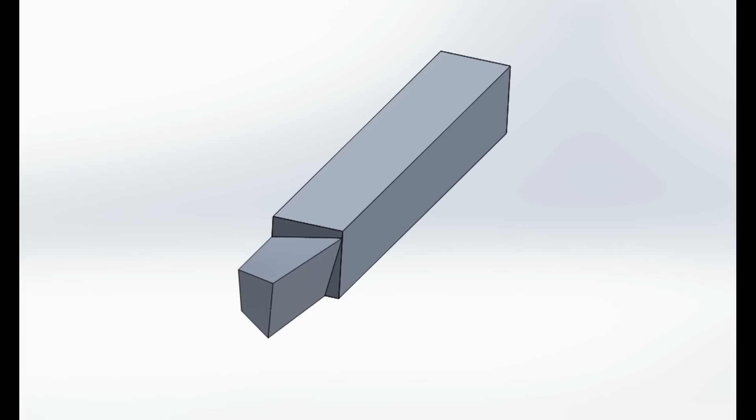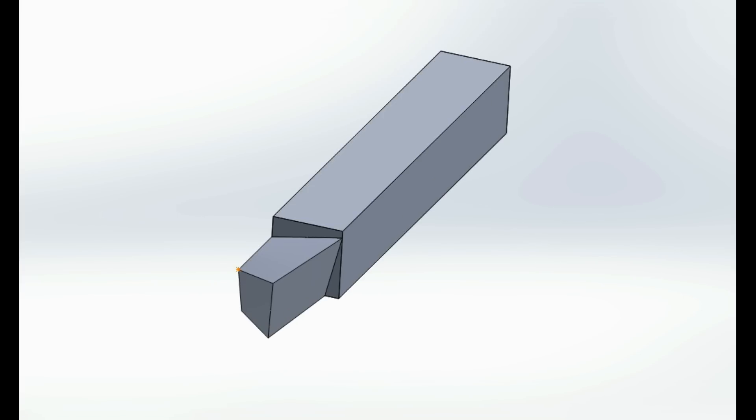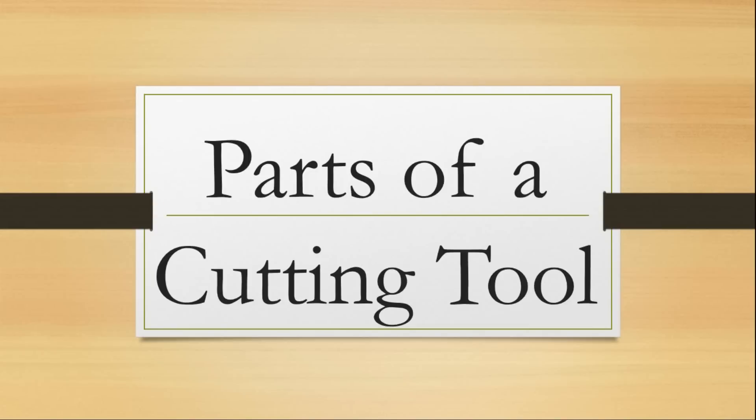An important part of any machining process is the cutting tool, which removes unwanted material from the blank as chips. In conventional machining processes, the tool material is always harder than the workpiece material. Let's have a look at the parts of a cutting tool.